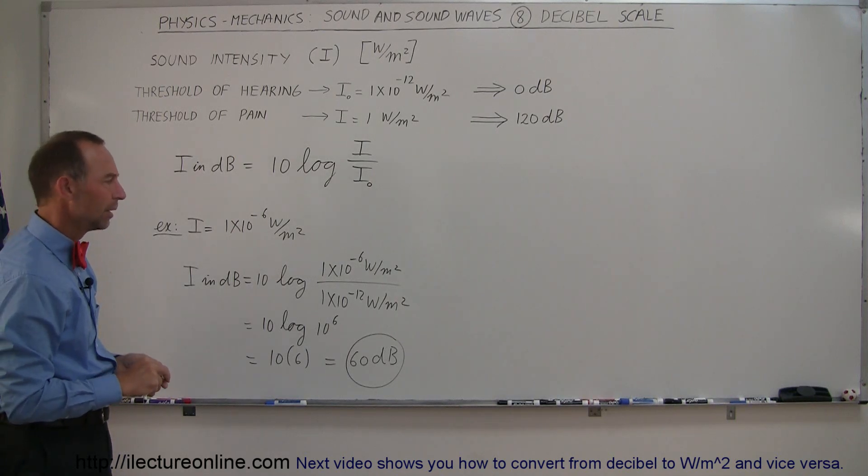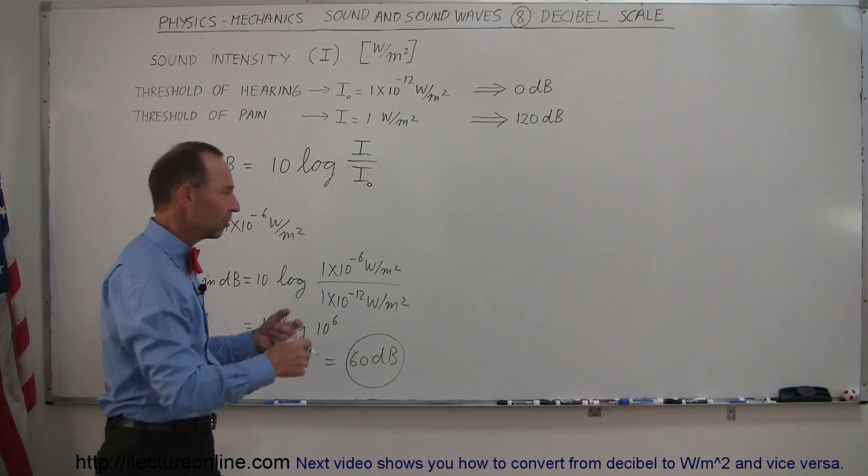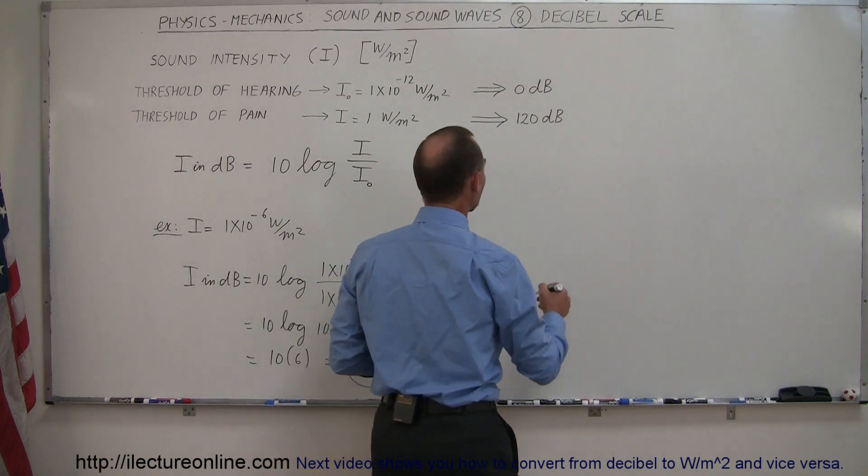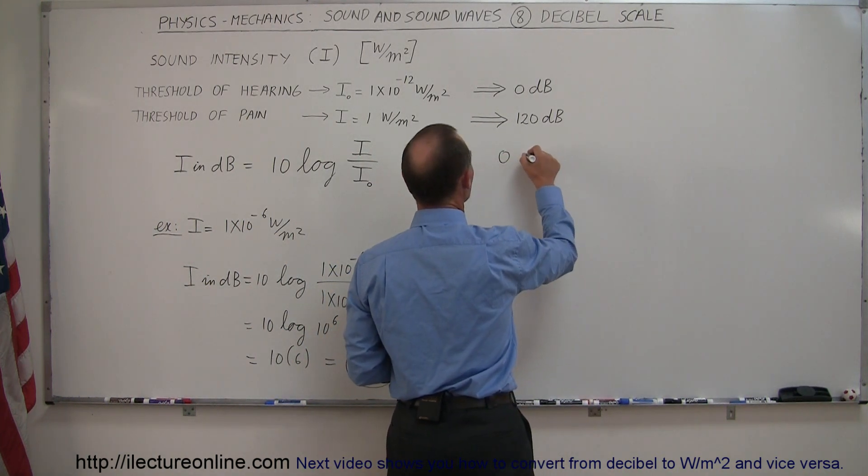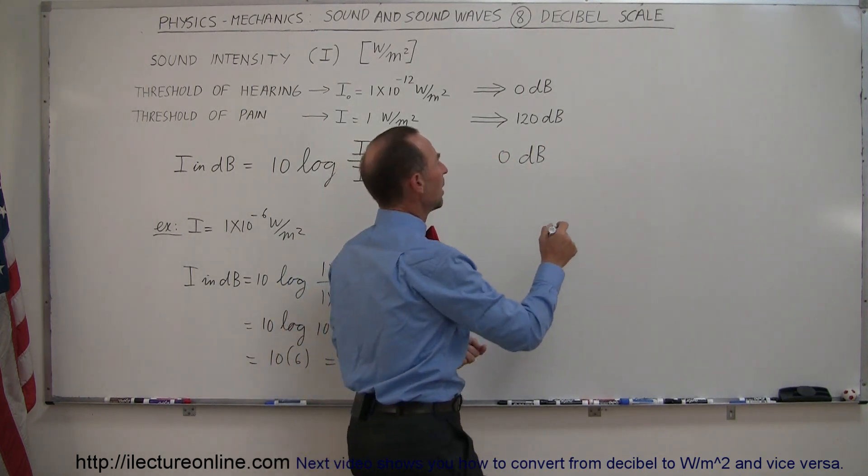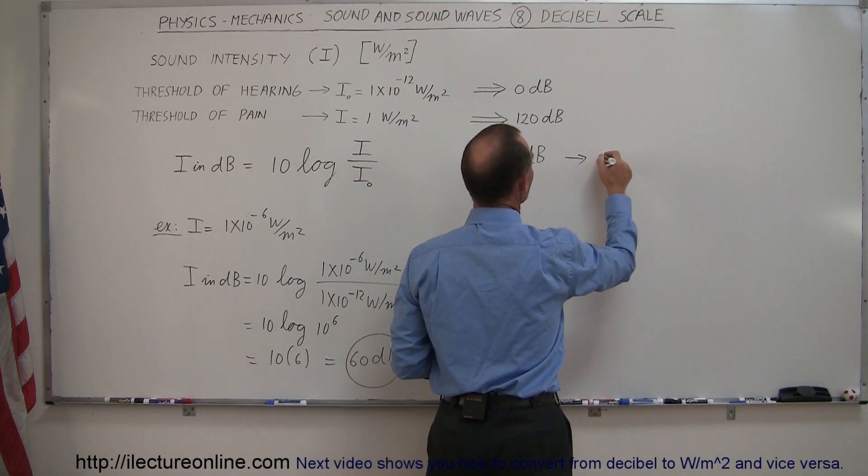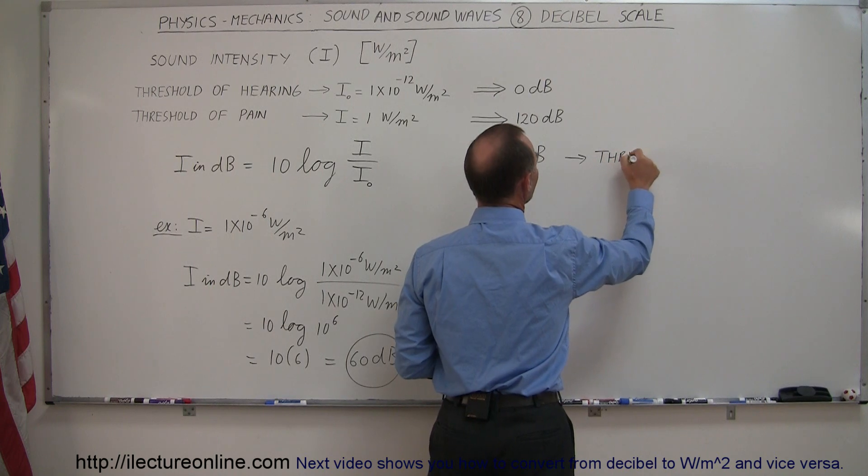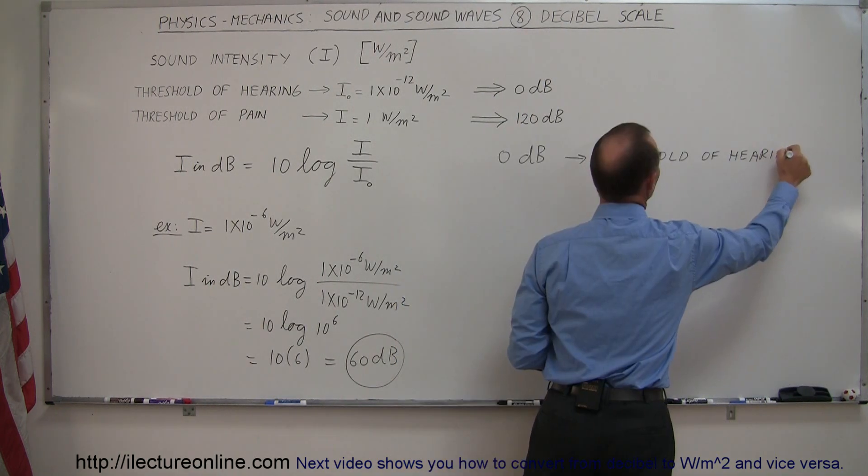And so that's a lot easier scale to work with. For example, let's draw out some sounds. If we start at zero decibels, as we call them, zero dB sound intensity, that is the threshold of hearing—that's the faintest sound that we can hear.